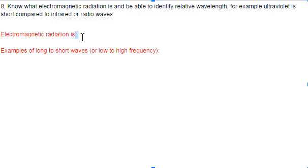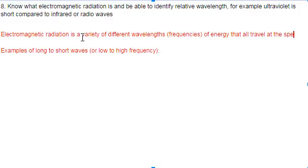So electromagnetic radiation is a variety of different wavelengths and therefore frequencies of energy that all travel at the speed of light.